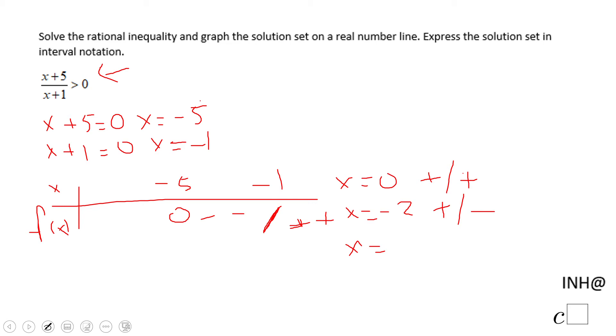And then we're going to take an x that is less than negative 5, like negative 6. x plus 5 becomes negative, x plus 1 becomes negative. The quotient of these two negative numbers will be a positive number.